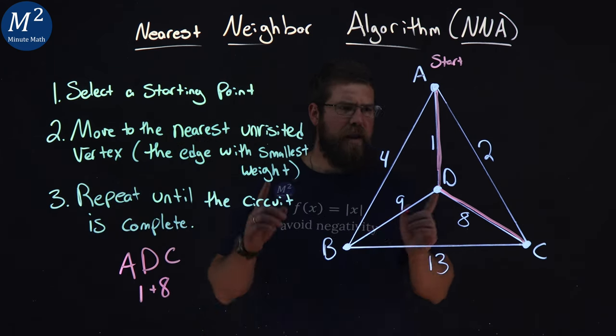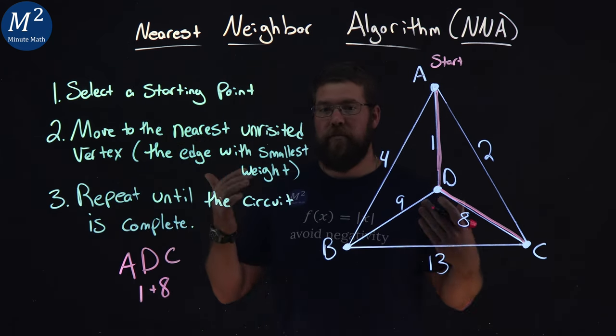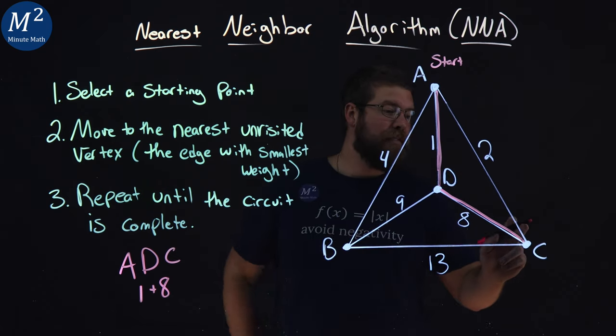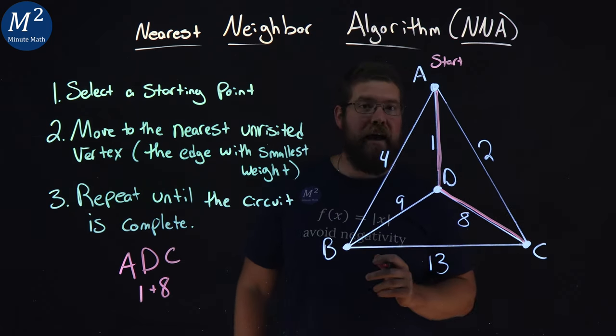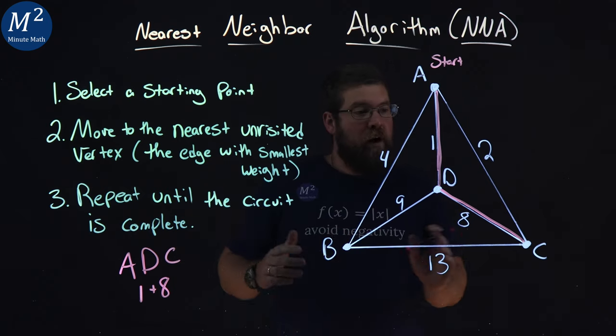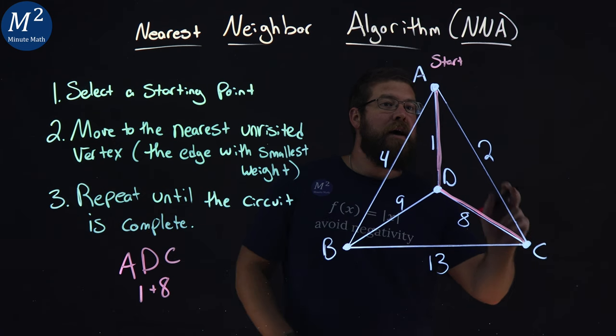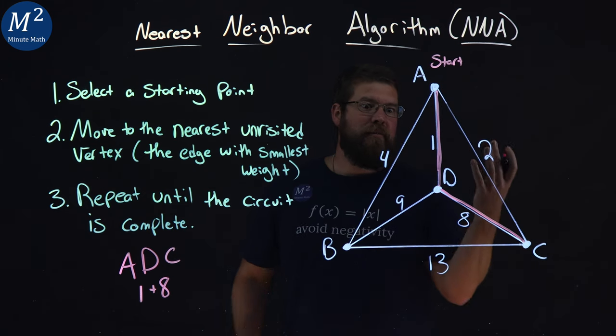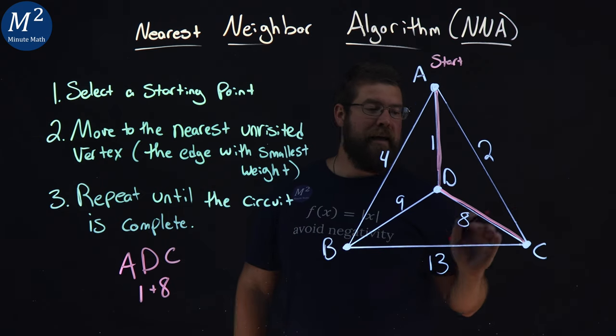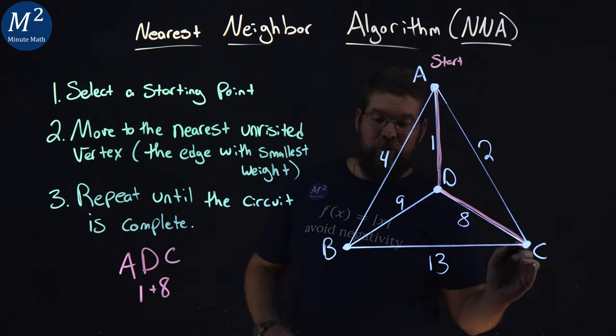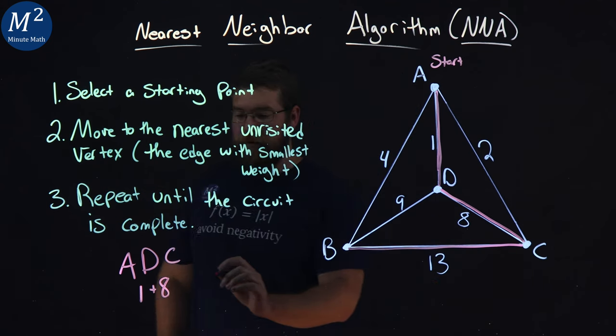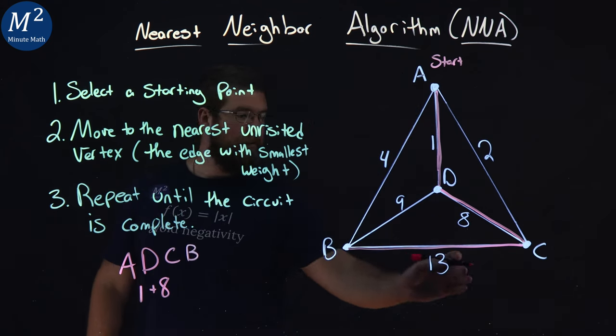Now from C, we're repeating this process. I have to go to the nearest unvisited vertex. I cannot go back to A because I haven't hit every single vertex out there. Although it's the nearest one, I would then create a circuit and we wouldn't have every single vertex here. So I cannot go to A in this graph. I have to go to B. So we go to B right here, and that was a weight of 13.